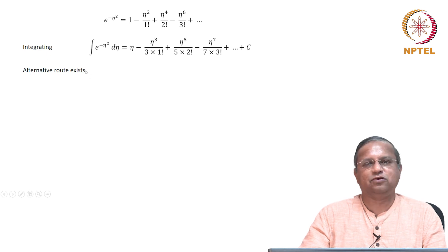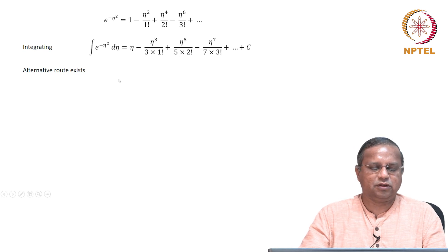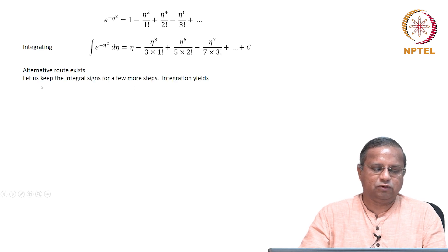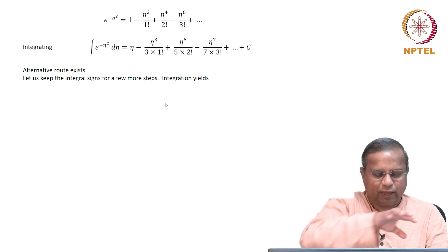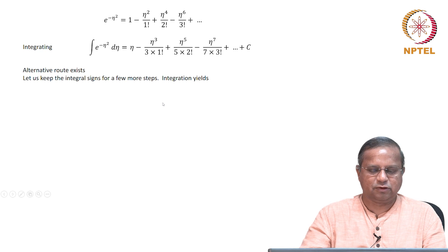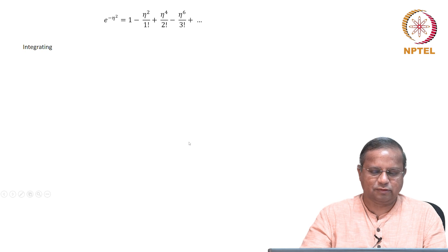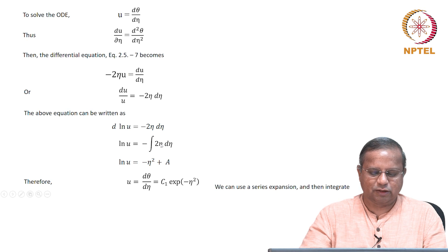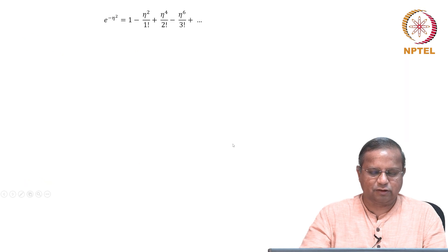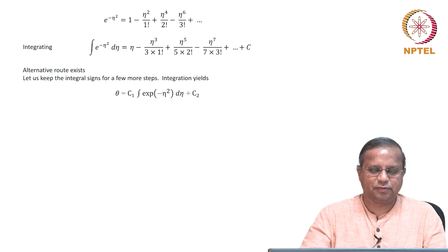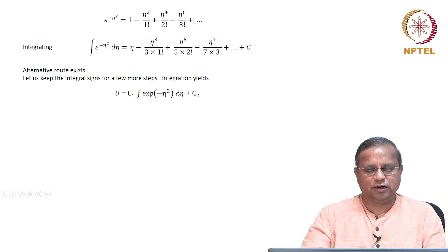However, there is an alternative route. I am going to go back a few steps and keep the integral sign, as it becomes clearer. Going back, θ equals c₁ times the integral of exponential of minus η² dη plus c₂. That is the integral we had before expanding as a series.